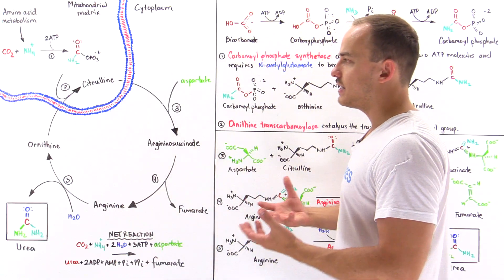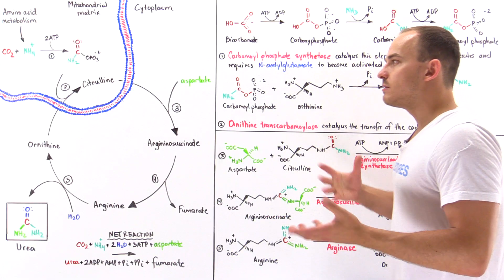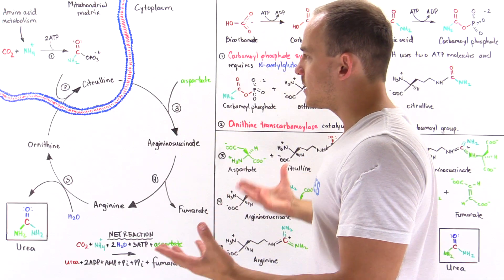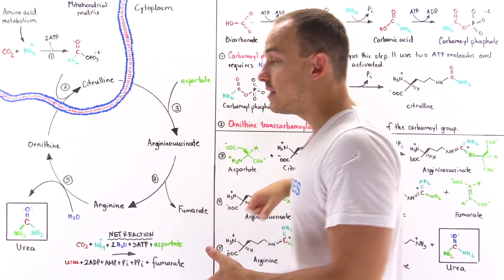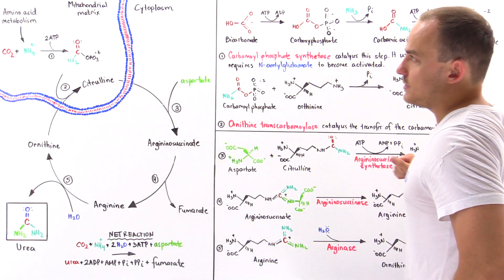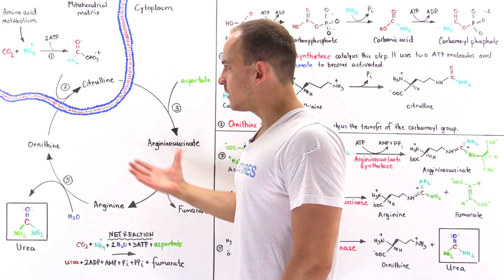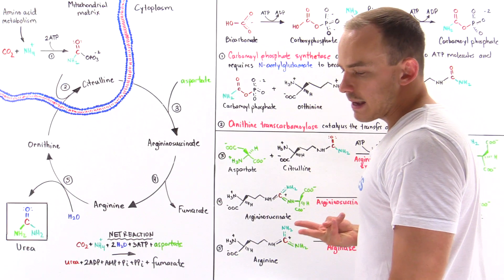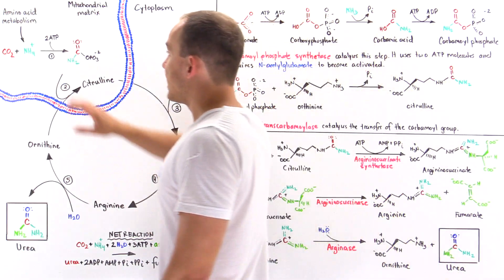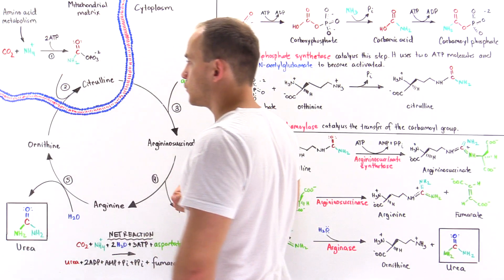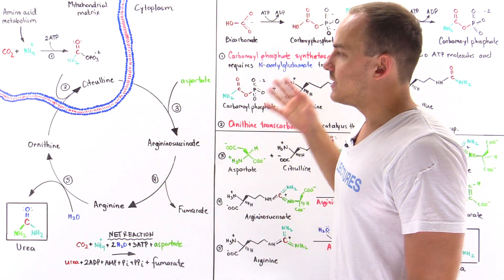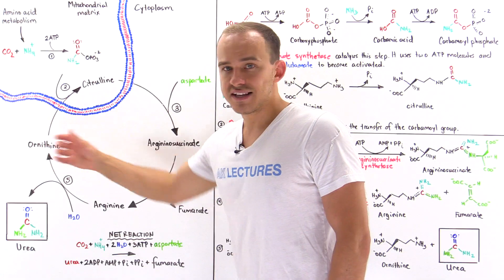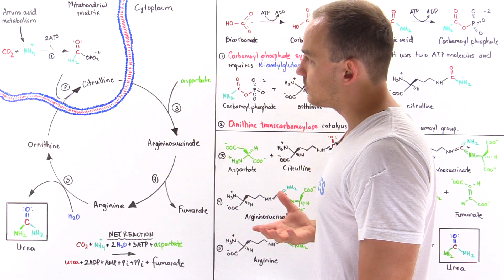Now let's look at the details of this cycle. We can break it down into five steps. Steps one and two take place in the matrix of the mitochondria of the liver cell. The other three steps — three, four, and five — take place in the cytoplasm of the hepatocyte.